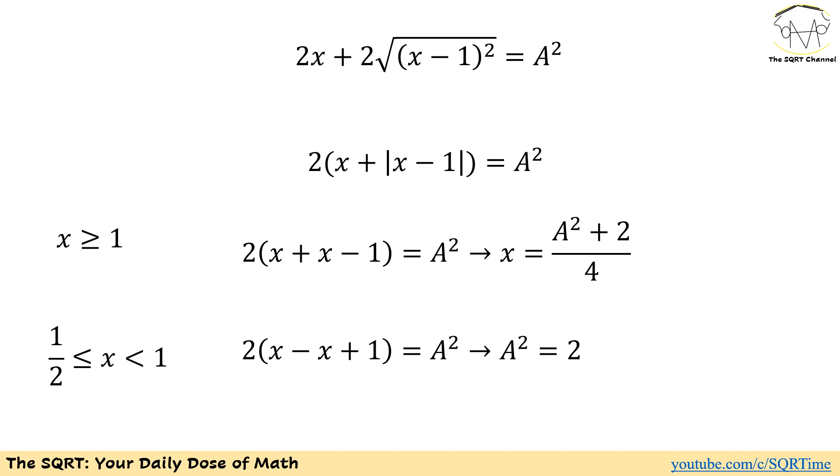For the other case that x is less than 1, remember, we know that x needs to be greater than or equal to 1 over 2. For this case, the absolute value of x minus 1 is going to be 1 minus x, and then if you add x to it, we are going to end up with A squared needs to be 2.